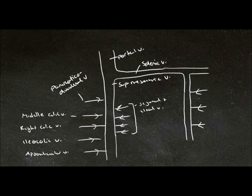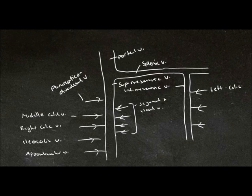Draining the rest of the large intestine is the inferior mesenteric vein, which is joining the splenic vein. And this collects blood from the left colic veins, the sigmoid veins, and the superior rectal veins.